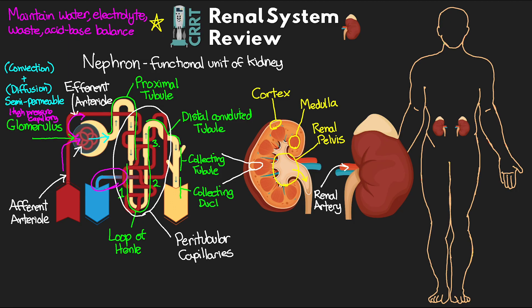The high volume of water filtrate that has left the glomerulus first enters the proximal tubule, which is responsible for the reabsorption of water and important solutes and electrolytes — including potassium, sodium, chloride, glucose, and bicarbonate. On top of this reabsorption, hydrogen ions are also passively secreted here.